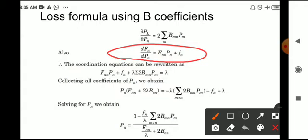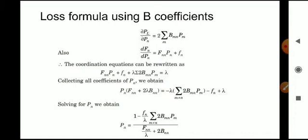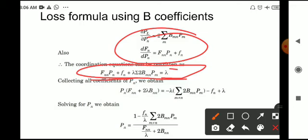Therefore the coordination equation can be written as dFn/dPn plus lambda into ∂PL/∂Pn equals lambda. Substituting the values of ∂PL/∂Pn and dFn/dPn into this equation, we get: F_NN · P_N plus f_N plus lambda into sigma(2·B_MN · P_M) equals lambda. By substituting these values into the coordination equation we obtain this combined equation.